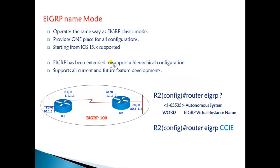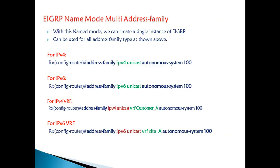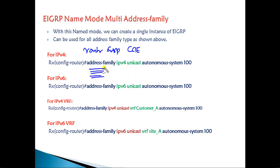In Named Mode, everything is configured under a single routing configuration. The command starts with 'router eigrp' followed by an instance name. For example, 'router eigrp CCIE', and then we define configurations under that instance using address families. For IPv4, we go to 'address family ipv4 unicast', specify an autonomous system number, and all IPv4-related configurations go there. Similarly, IPv6 configurations go under their address family, and MPLS VRF implementations come under 'vrf ipv4' or 'vrf ipv6'. That is why we call it the multi-address family mode.